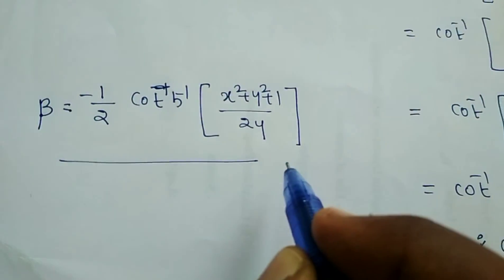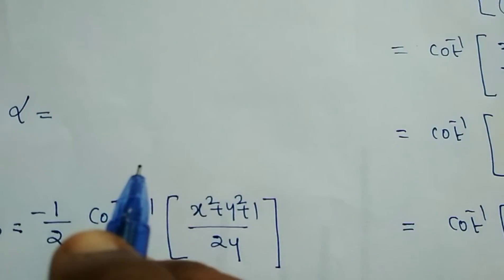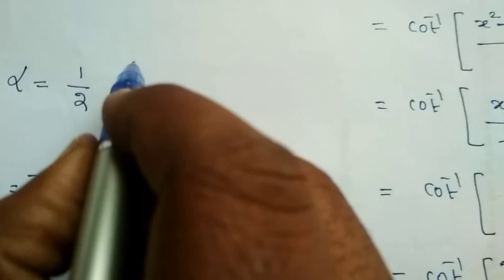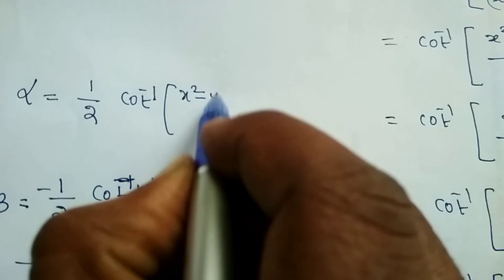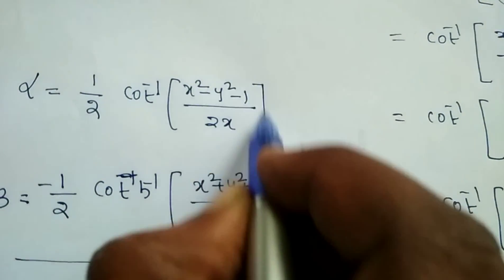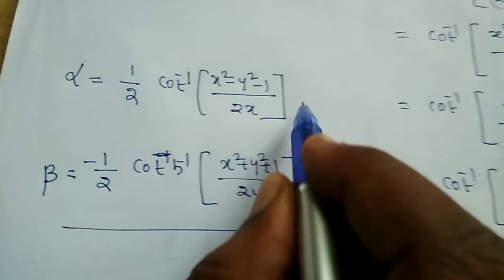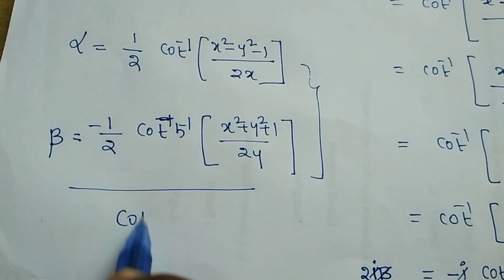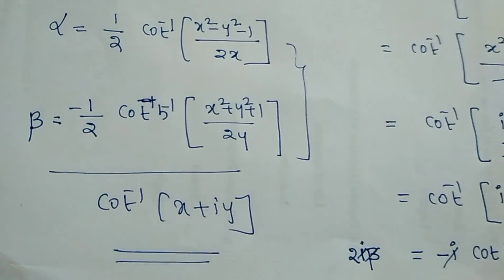So this is the imaginary part, and the real part is alpha equals one half times cot inverse of x squared plus y squared minus 1 over 2x. These are the real and imaginary parts of cot inverse of x plus i y. Thank you.